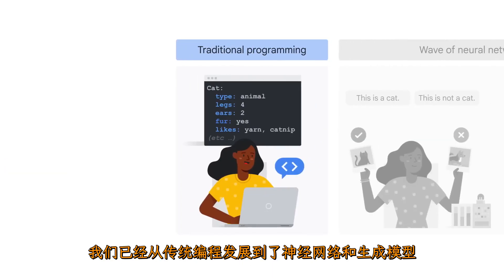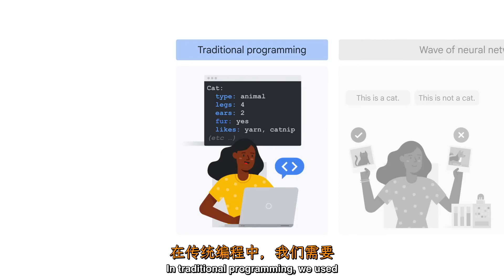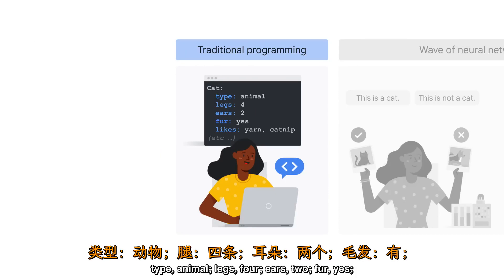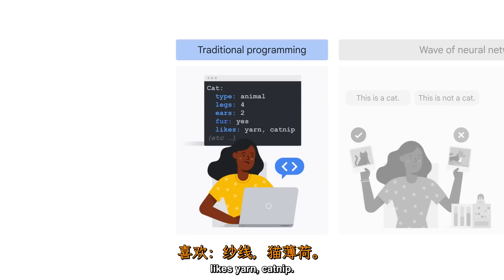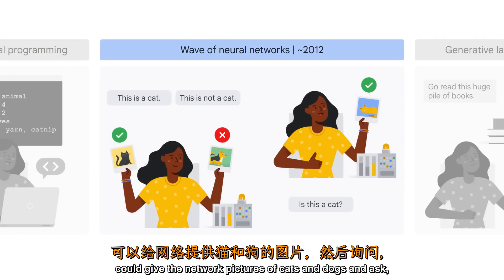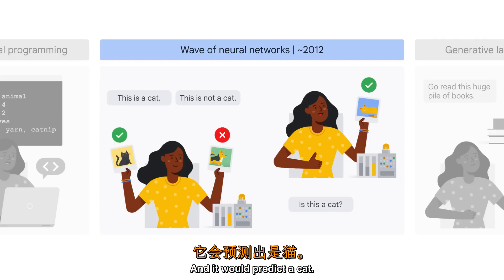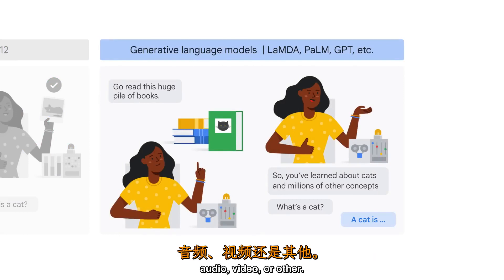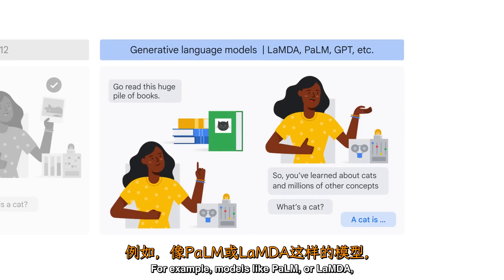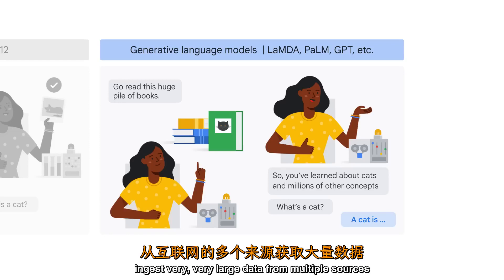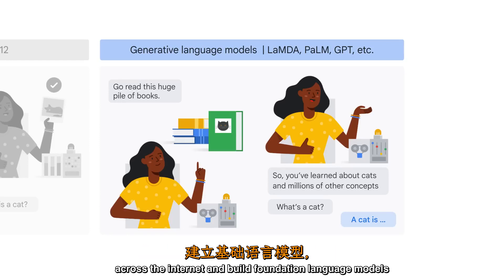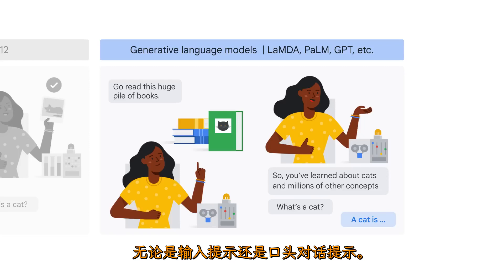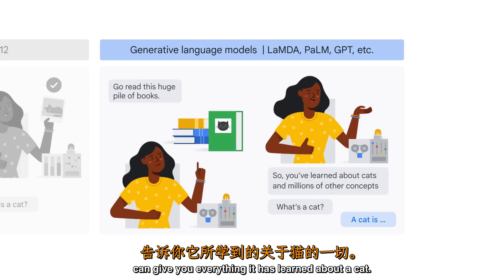We've come a long way from traditional programming to neural networks to generative models. In traditional programming, we used to hard-code the rules for distinguishing things like a cat. In the wave of neural networks, we could give the network pictures of cats and dogs and ask, is this a cat? — and it would predict a cat. In the generative wave, we as users can generate our own content, whether it be text, images, audio, video, or other. Models like PaLM or LaMDA ingest very large data from multiple sources across the internet and build foundation language models we can use simply by asking a question — whether typing it into a prompt or verbally talking into the prompt. When you ask it what's a cat, it can give you everything it has learned about a cat.